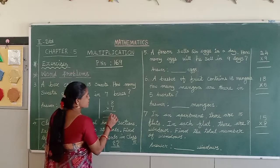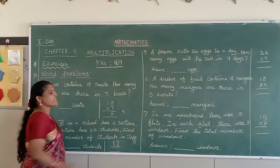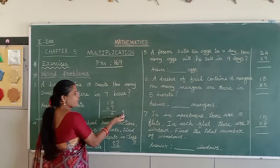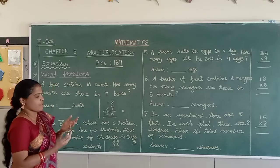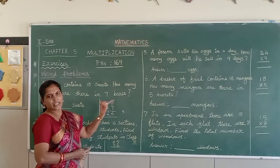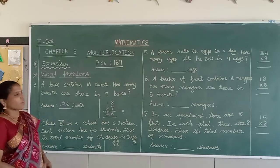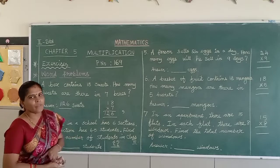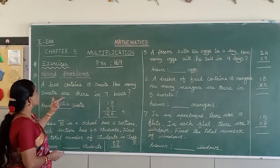7 eights are 56 — from the 7-times table up to 8, you find the product. 7 eights are 56: write 6 in the ones place and carry 5. Then 7 sevens are 7, plus 5 carried makes 12. So 18 into 7 equals 126.